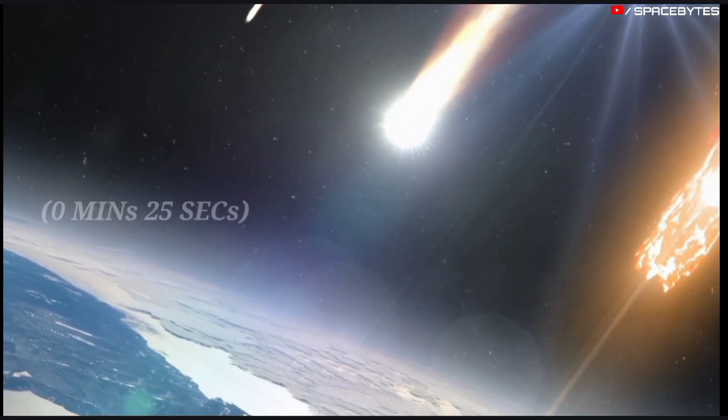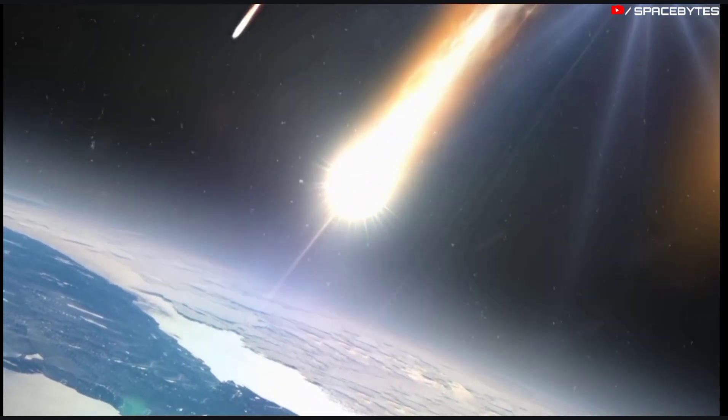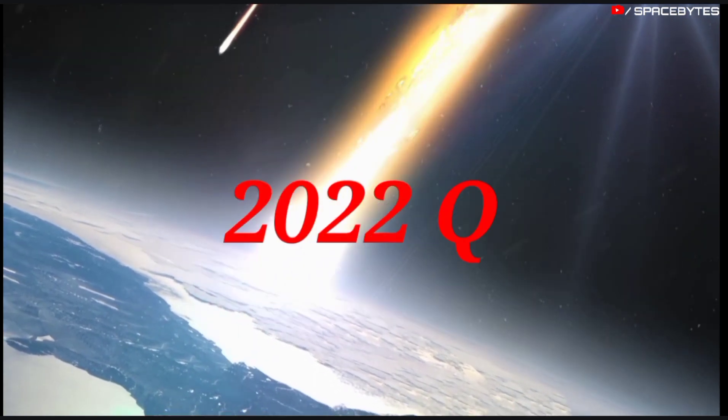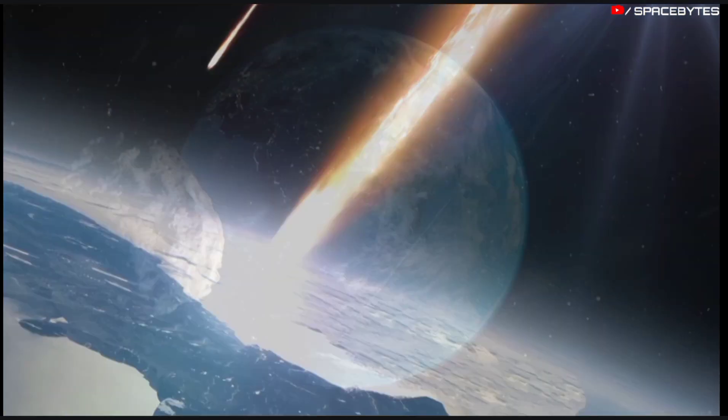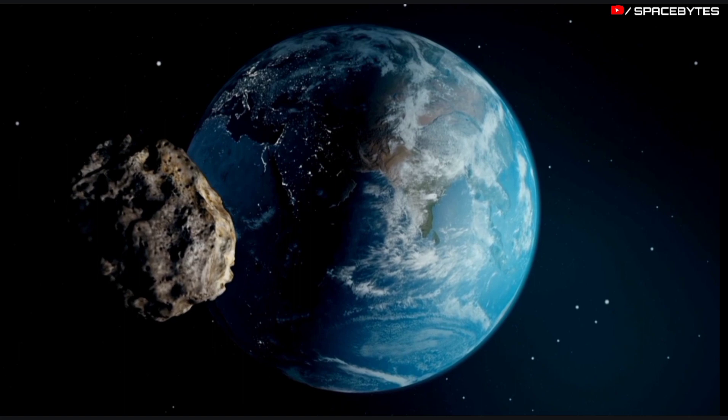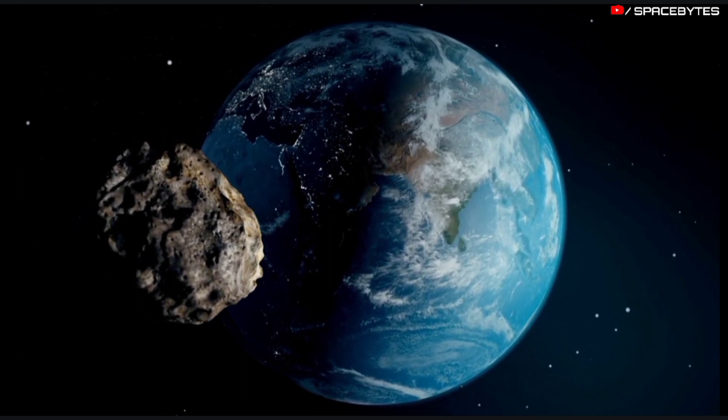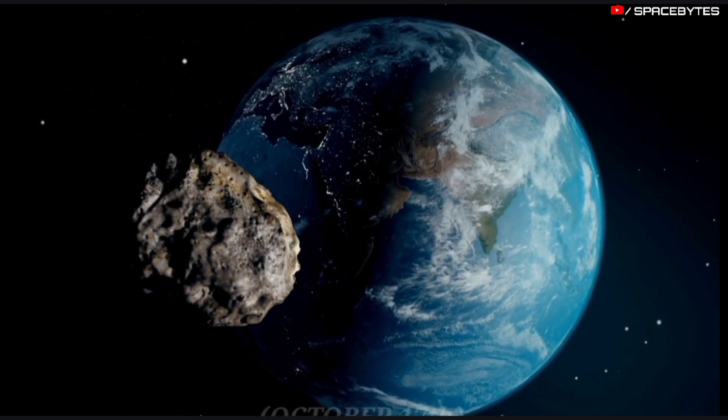Light takes zero minutes and 25 seconds to travel from Asteroid 2022 QM-6 and arrive to us. This asteroid will pass past Earth on October 17.